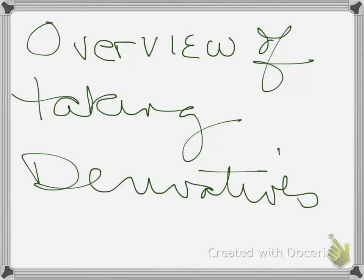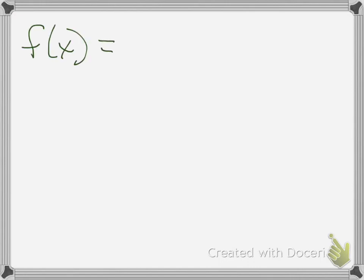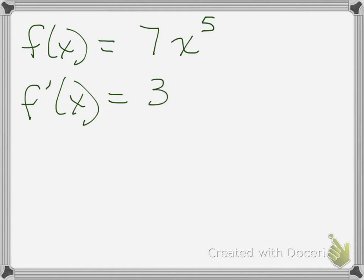In this video, we're going to go over an overview of taking derivatives in calculus. Let's start with the power rule. So if you have f of x equals 7x to the 5th, your derivative, using good notation, will be 35x to the 4th.